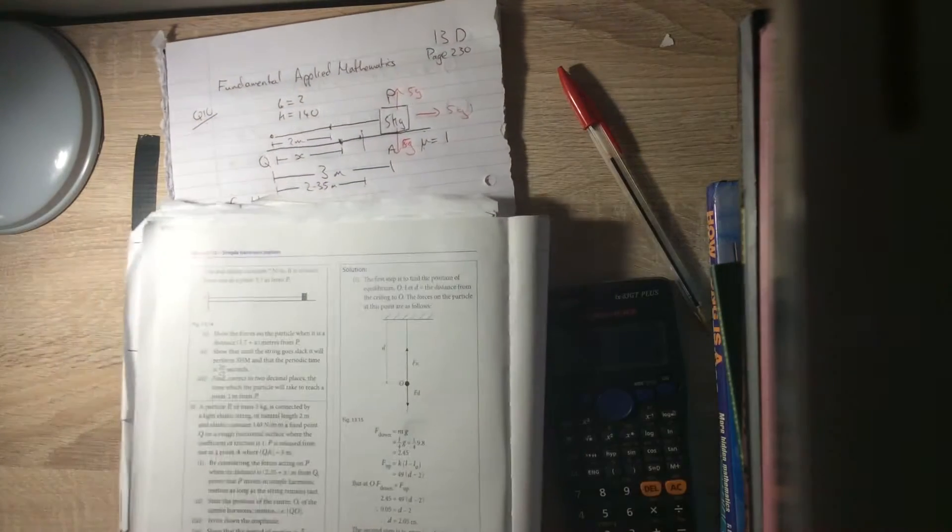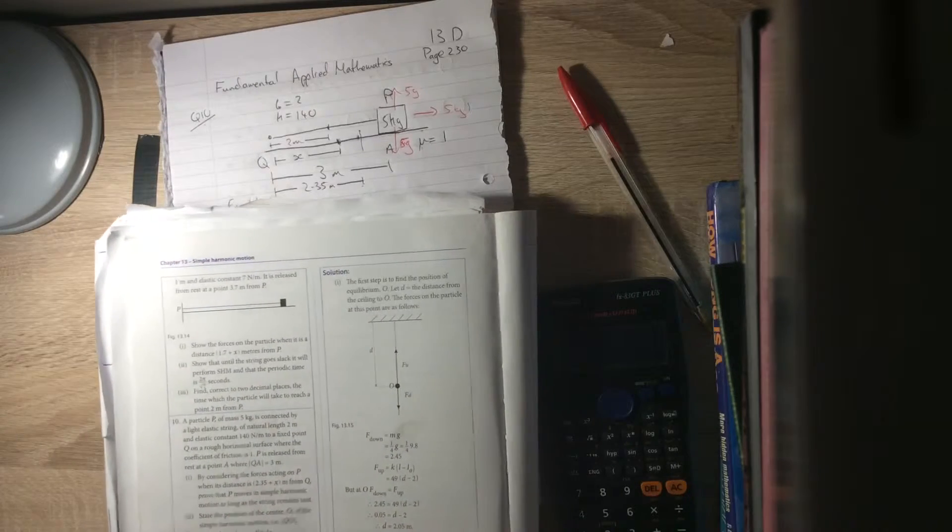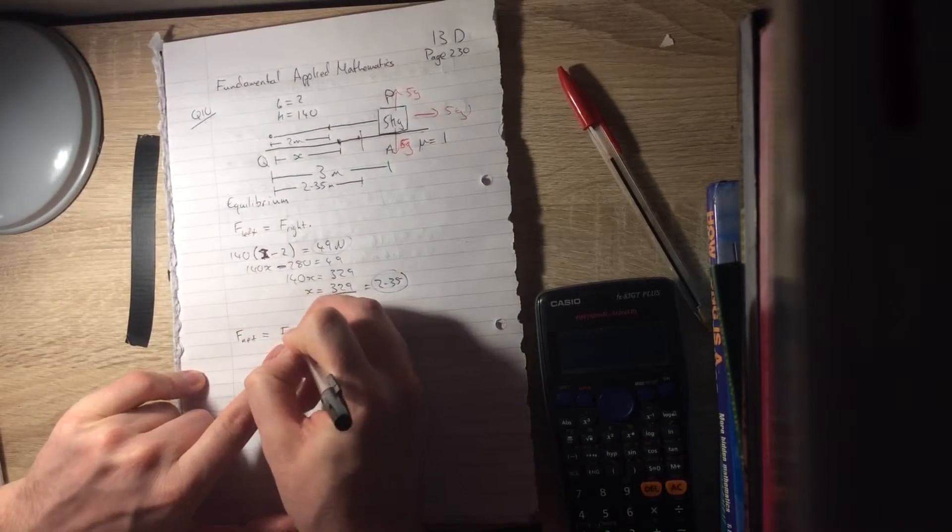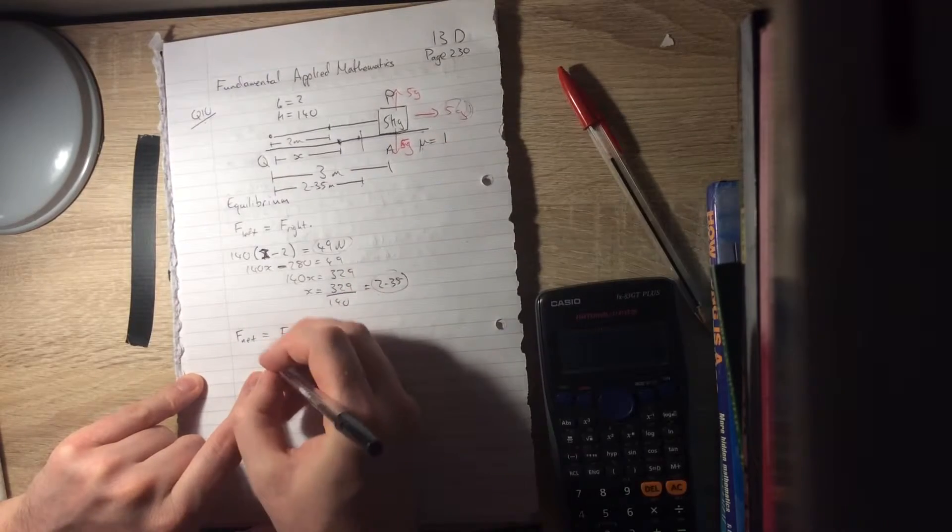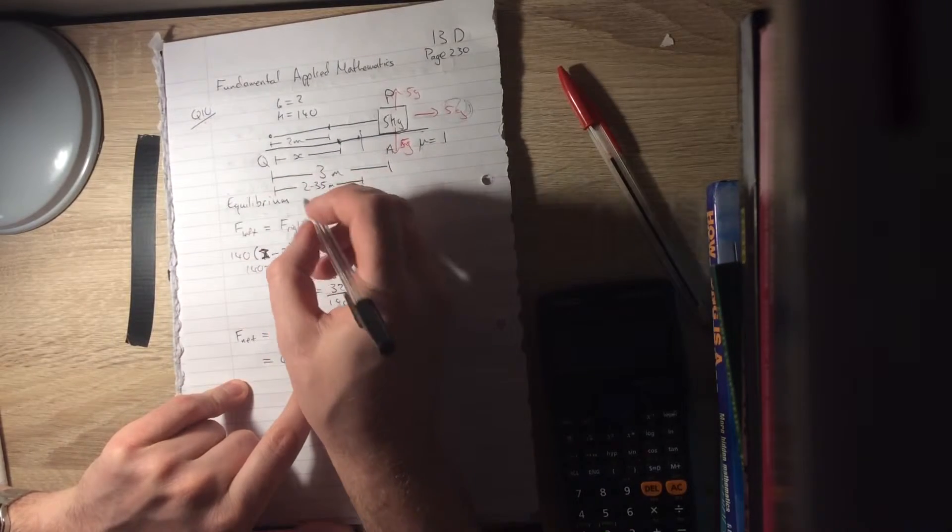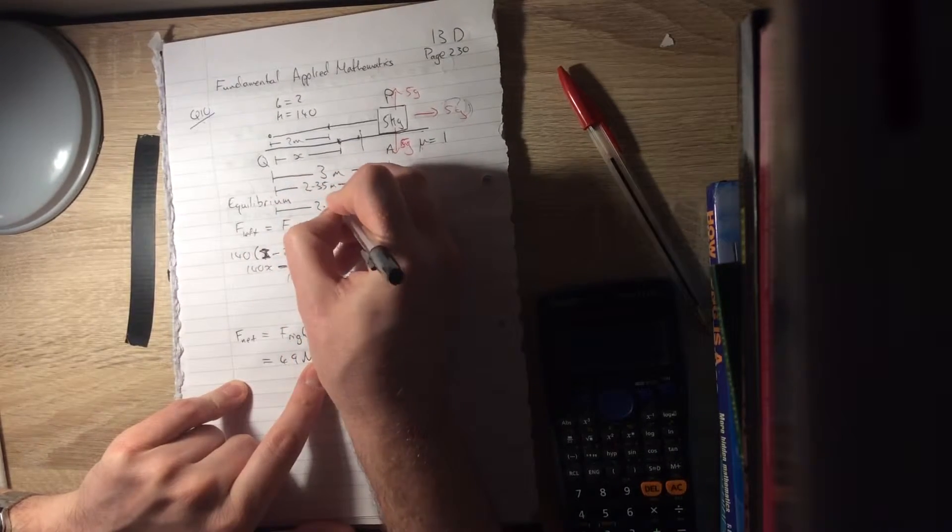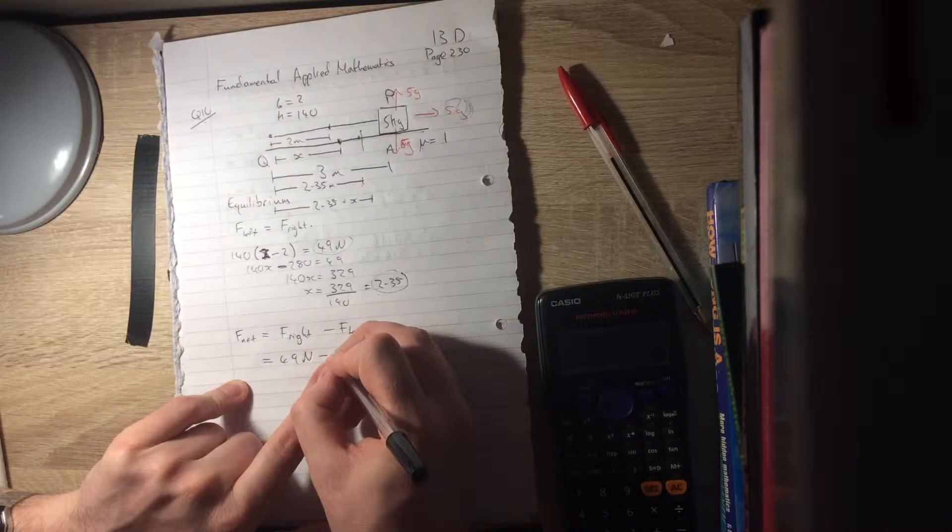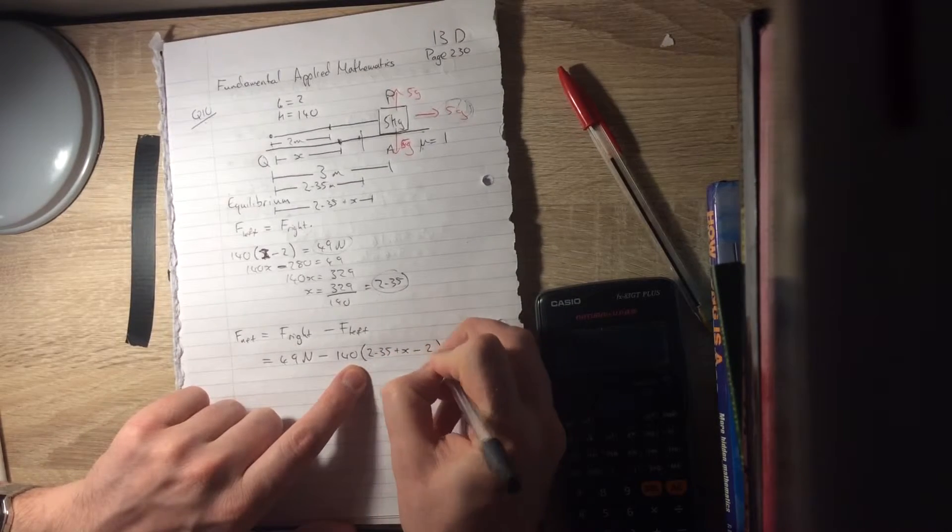So the question says, by considering the force acting on P when it is a distance 2.35 plus x from Q, prove that it moves in simple harmonic motion as long as the string remains taut. So our net force is going to be our forces to the right minus forces to the left. Forces to the right here are 5g, 49 newtons, minus our force to the left. If we are a distance 2.35 plus x, so we're beyond our equilibrium point, we're not quite at 3, then the length of the string is that. So that's going to be 140 times the length of the string, 2.35 plus x minus its natural length 2.